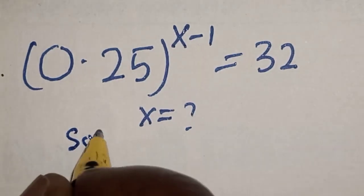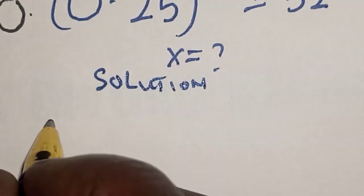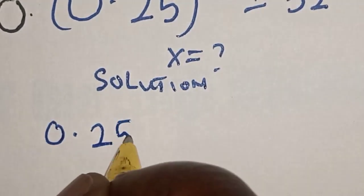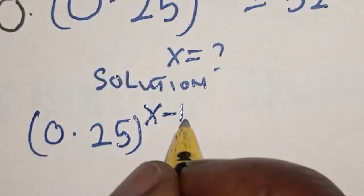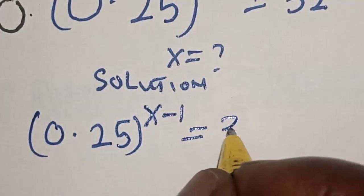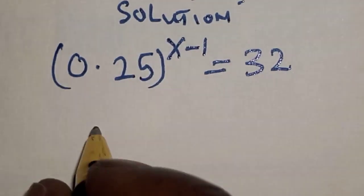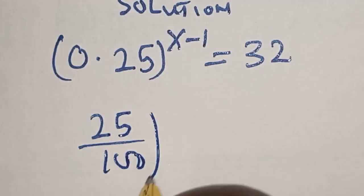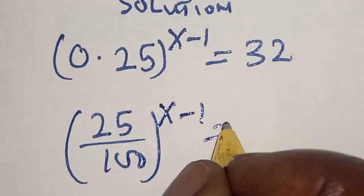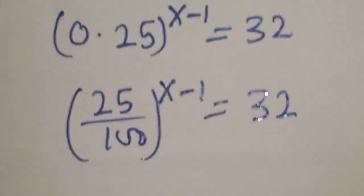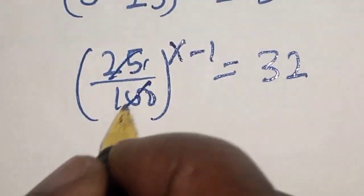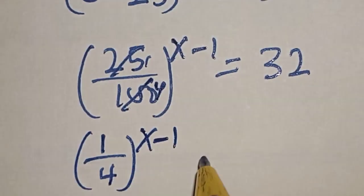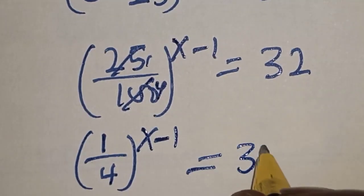Solution. We have the given equation: 0.25 raised to power s minus 1 is equal to 32. This is 25 divided by 100, raised to power x minus 1, is equal to 32. Simplifying, 1 divided by 4, raised to power s minus 1, is equal to 32.